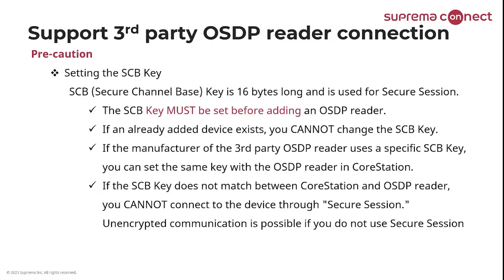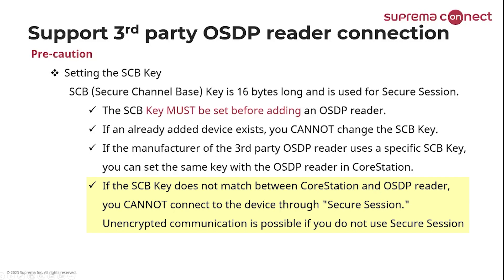Setting the SCB key is a very important feature requiring precaution. The Secure Channel Base key is a 16-byte key used for a secure session. The SCB key must be set before adding an OSDP reader. If a device has already been added, you cannot change the SCB key — meaning if you've already set it up, you cannot make additional edits. If the third-party OSDP reader manufacturer uses a specific SCB key, set the same key on both the OSDP reader and CoreStation. If the SCB keys do not match, you cannot connect via secure session. Unencrypted communication is possible if you do not use secure session.